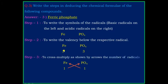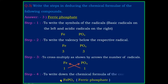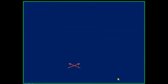Since both valencies are 3 and 3, divide by 3, giving 1 and 1. Step 3: cross multiply as shown by the arrow. Cross multiply 1 with PO₄ and 1 with Fe. Step 4: write down the chemical formula — the formula is FePO₄, ferric phosphate.